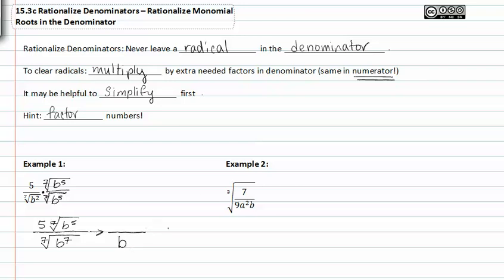Ta-da! We got rid of the radical. In the numerator we can't simplify further, so we leave it as five times the seventh root of b to the fifth.